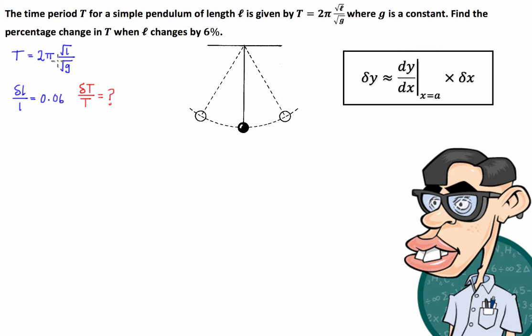So we're going to go straight to the derivative of T with respect to l. We have dT/dl is equal to π divided by the square root of g times l.